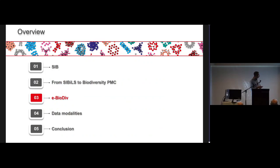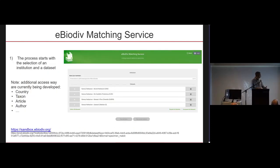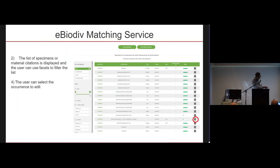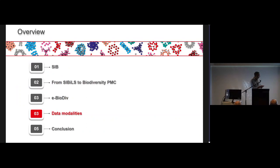We also have services to match specimens with material citations. The idea is that you can navigate either starting from specimen collections — we start with GBIF — or from citations, and we try to match them together. This is the eBiodive matching service. If you start with a specimen from a botanical garden collection in Geneva, you select a particular record and see the similarities matched against your query. You can then choose to establish or reject the relationship between the two entities.